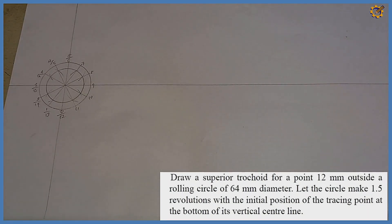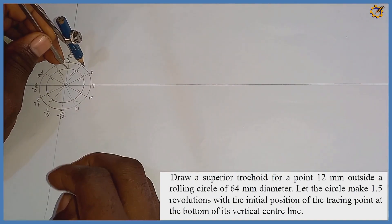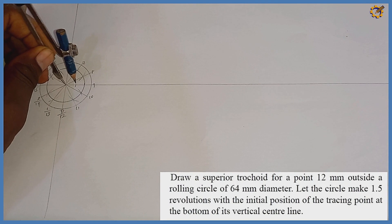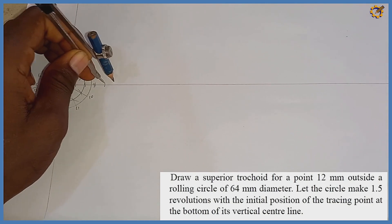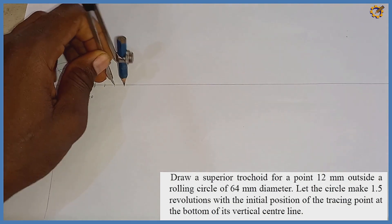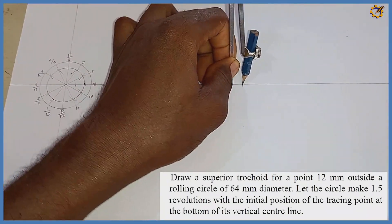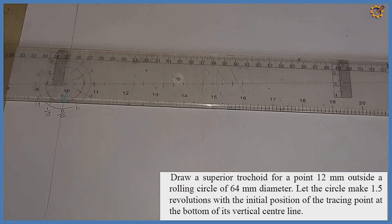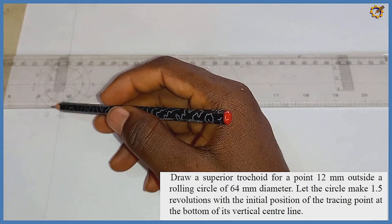Next I pick one of the arc divisions from the inner circle and, starting from the tangent point on the baseline, step it off 18 times: one, two, three, four, five, six, seven, eight... through to mark 18. After stepping it off 18 times, I draw a line tangential to the bigger circle.